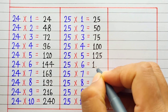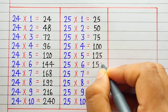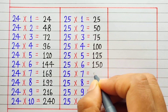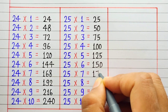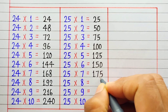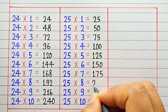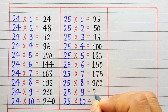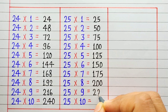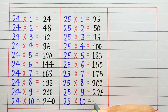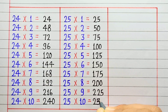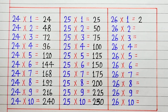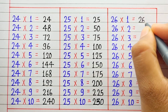25 6 ja 150. 25 7 ja 175. 25 8 ja 200. 25 9 ja 225. 25 10 ja 250.